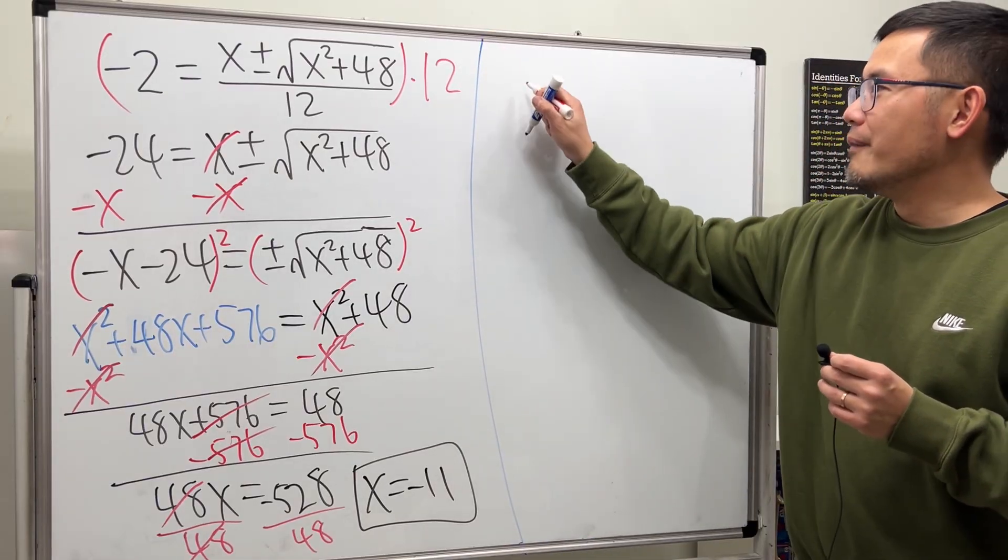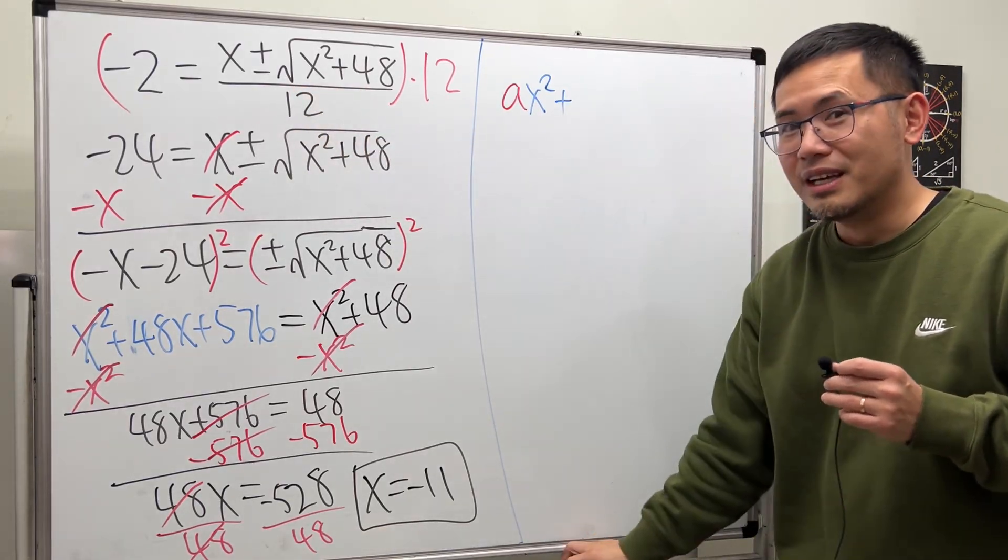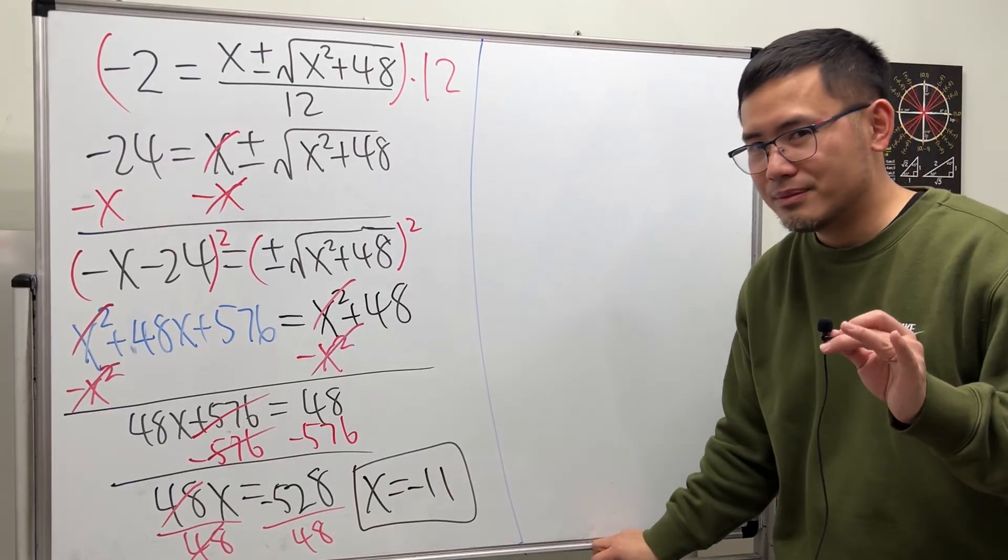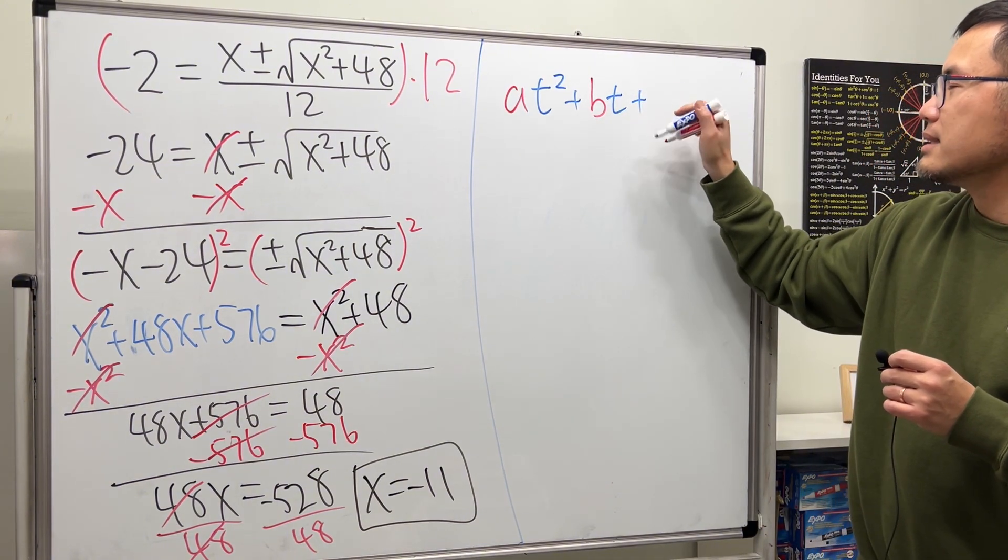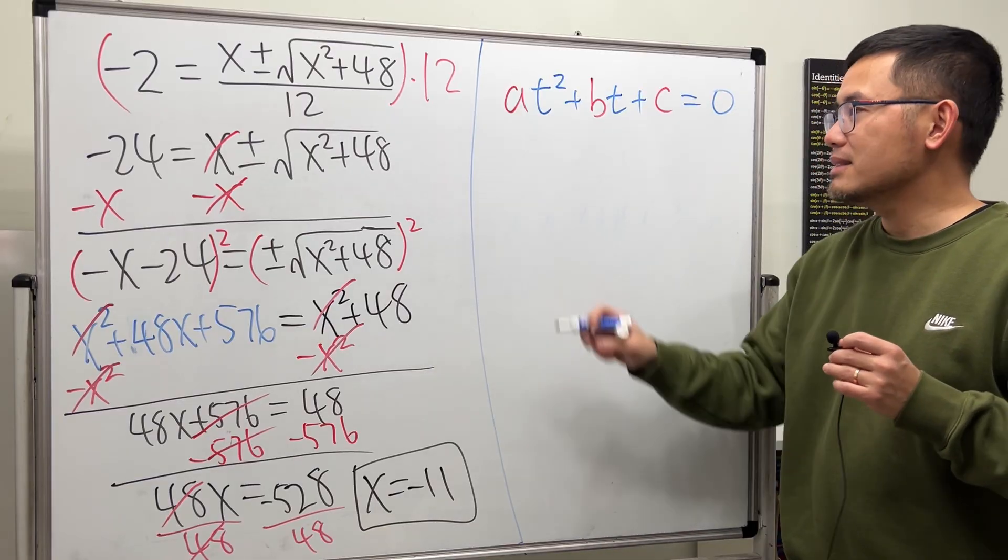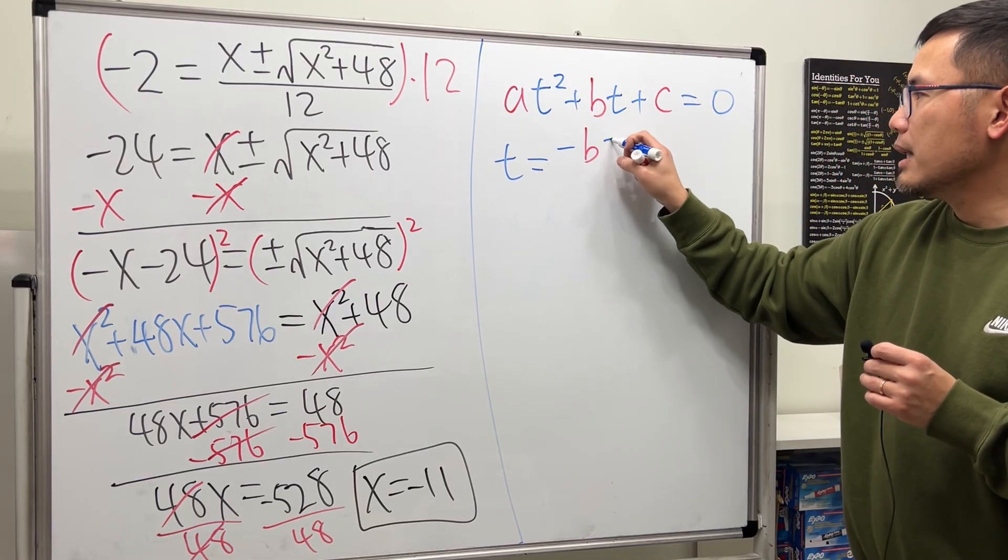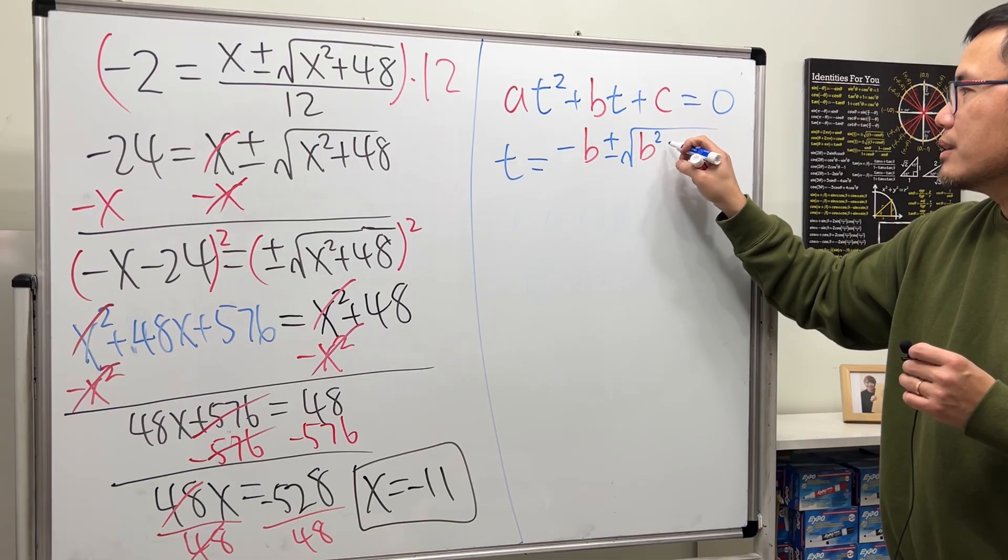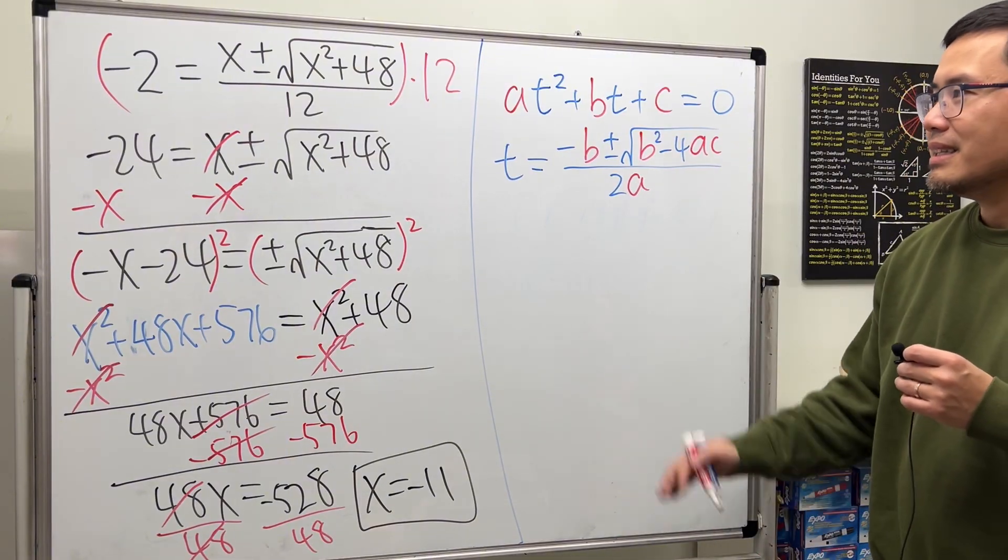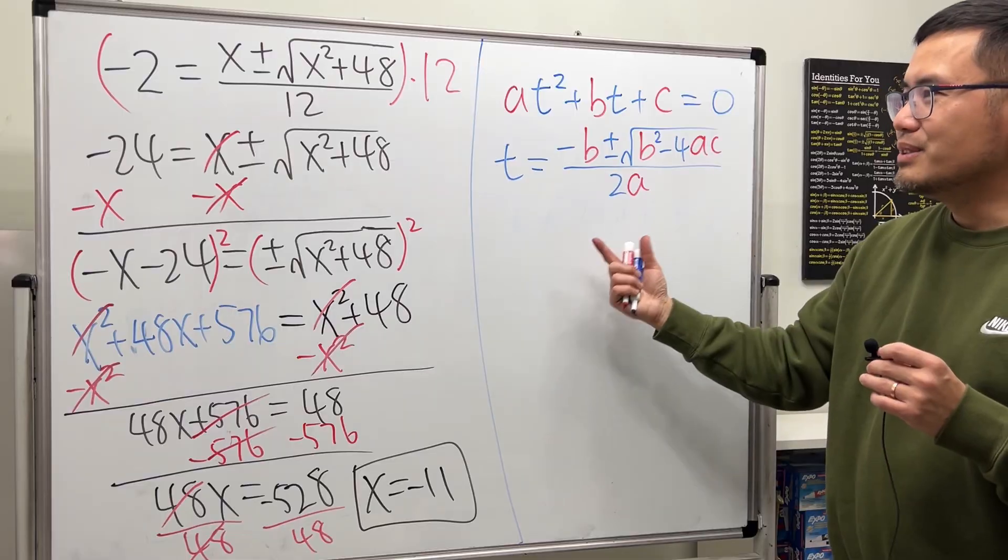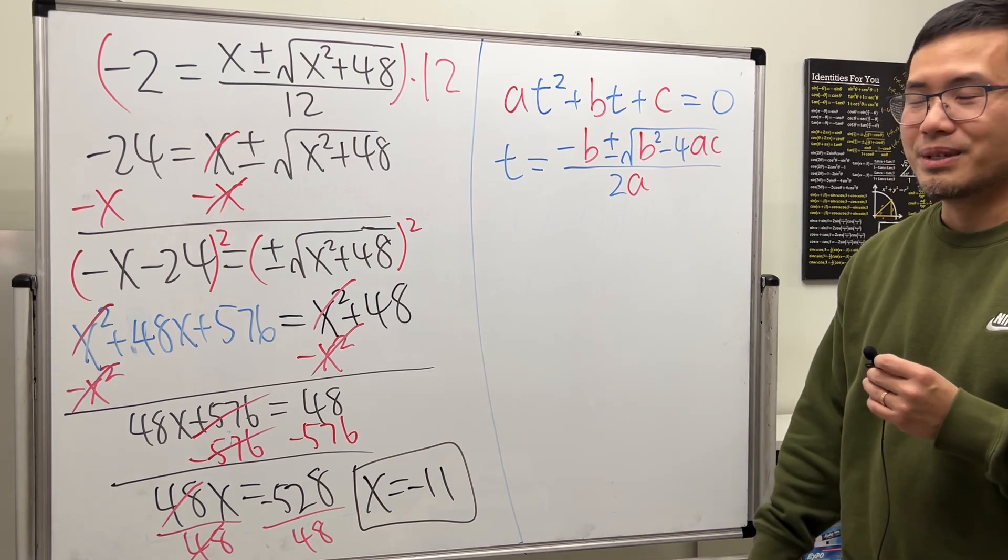Let me remind you guys, whenever we have a quadratic equation, ax squared plus, well, we are using x there. That's a little bit confusing. So let me use y or t. Let's say we have at squared plus bt plus c equals 0. Then that means our variable here is t. That will be equal to negative b plus or minus square root of b squared minus 4ac over 2a. Does this look familiar? Yes, it does.